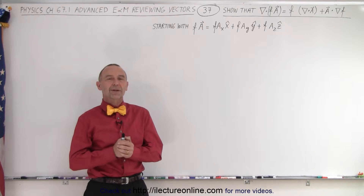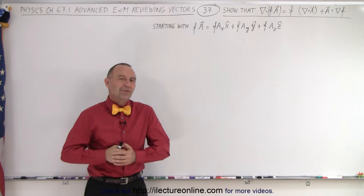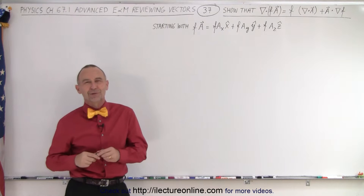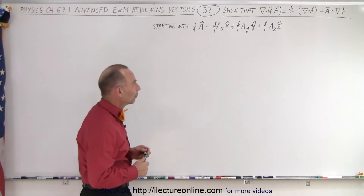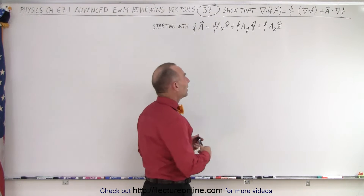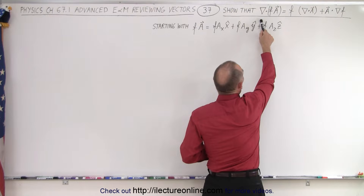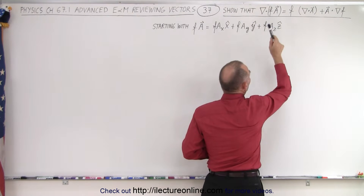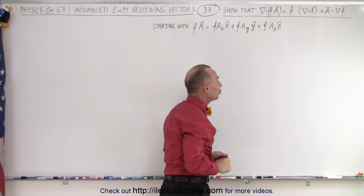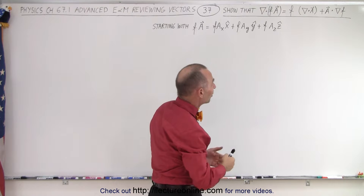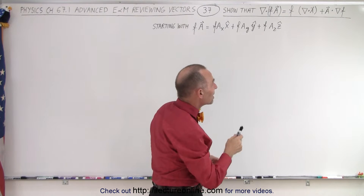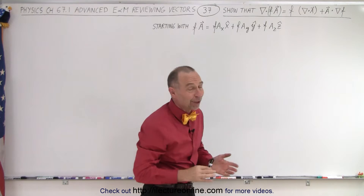Welcome to Electronline. To get some more familiarity with the product rules of vectors, let's try to show the following. Here we have the divergence of the product of f times vector A should be equal to f times the divergence of A plus A times the gradient of f.